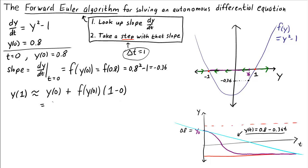We'll put in our numbers. y(0) is 0.8, f(y(0)) is negative 0.36, which we have to multiply by 1. Because this 1 is how much time changed in our time step, this is our Δt. Therefore, our estimate of y at time 1 is 0.44.